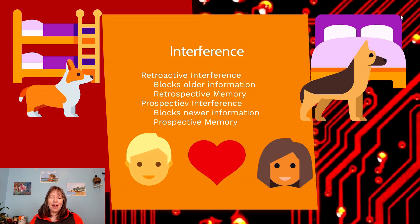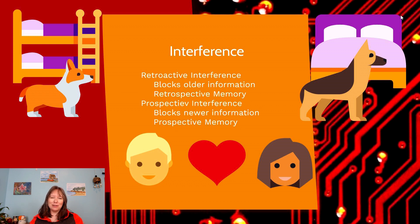In retroactive interference, talking to your best friend now makes you forget what it was like talking to your childhood best friend — you don't remember anything about them, their likes or dislikes. The new memories are essentially overwriting the old ones.